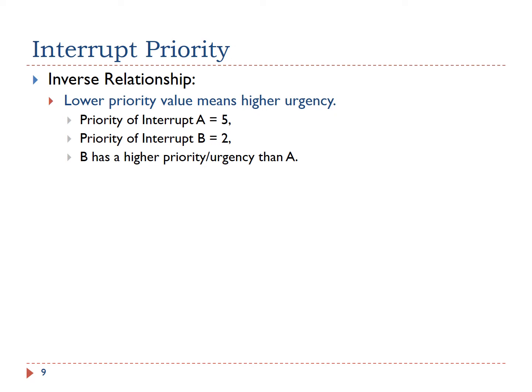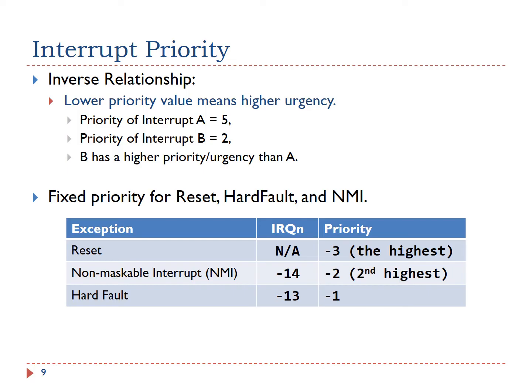For example, if interrupt A has priority value 5 and interrupt B has priority value 2, then B has higher urgency, and the processor will service B first if both arrive simultaneously. The priority of some interrupts is fixed: reset, NMI, and hard fault have fixed negative priority levels and the highest urgency. The priority levels of all other interrupts are adjustable.